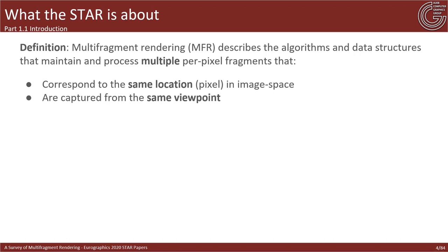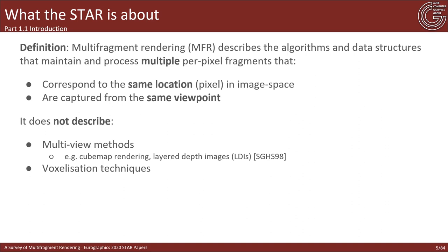Multi-fragment rendering describes the methods, algorithms, and data structures used to produce, maintain, and process sets of geometry fragments that first correspond to the same location in image space, and second are captured from the same viewpoint. Therefore, it does not describe methods that process information from multiple viewpoints, and it does not describe data structures addressable in object space like voxelization techniques.